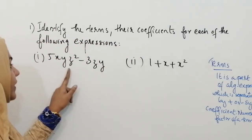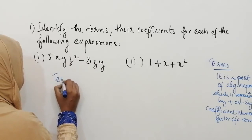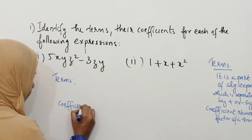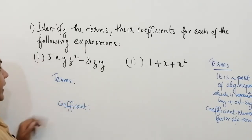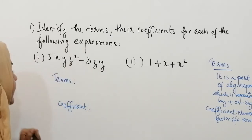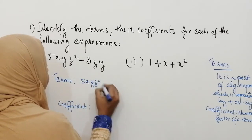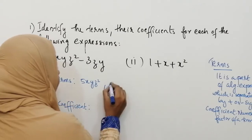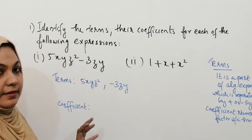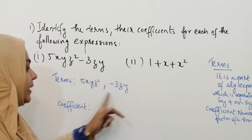Our first question is 5xyz² minus 3zy. First we can write the terms. In this algebraic expression there are two terms separated by minus sign. The first term is 5xyz² and the second term is minus 3zy. You have to write the term including its sign — if you write simply 3zy that is wrong; it is minus 3zy.